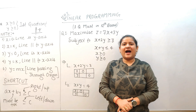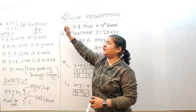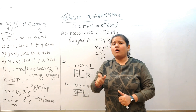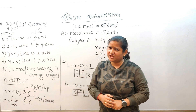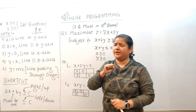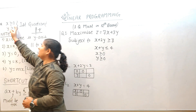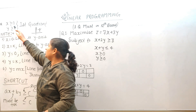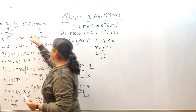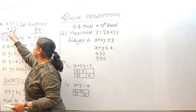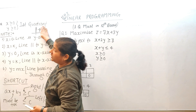Hello students! Linear programming is a very important topic for the 12th board exam — one long answer question must be asked in every board exam. Our concept here is that constraints with x ≥ 0 and y ≥ 0 mean we work in the first quadrant. Since x is beyond zero and y is beyond zero, combining both gives us the first quadrant, which will be shaded in every question.